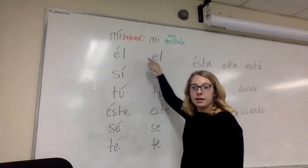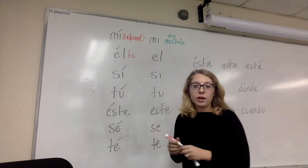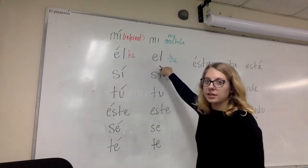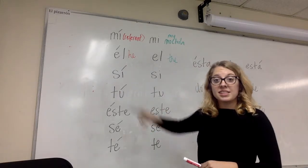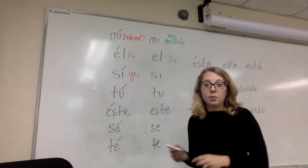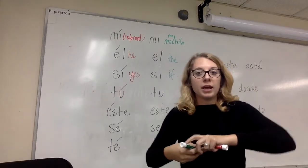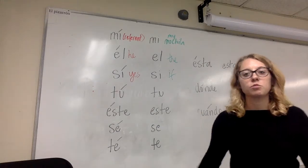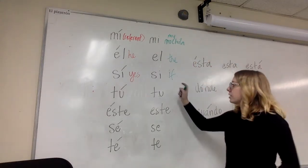Same thing with 'él' and 'el.' 'Él' with an accent means 'he,' whereas 'el' without an accent means 'the.' So that's why I say 'el libro' with no accent, but 'él es guapo' with an accent. We also have 'sí' and 'si' — pronounced the same way. 'Sí' with an accent means 'yes,' like 'sí se puede,' and 'si' without an accent means 'if,' like 'si tuvieras mucho dinero, comprarías muchas cosas' — if you had a bunch of money, you would buy a bunch of stuff. That's an example of an if-clause.